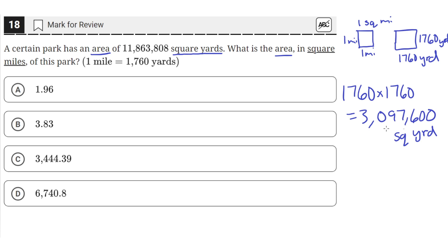So that's equal to one square mile. And since we're given that 11,863,808 square yards is the area, if we multiply that with one square mile divided by 3,097,600 square yards,